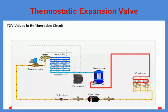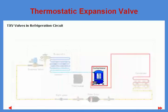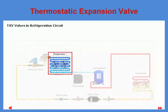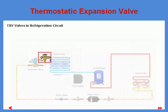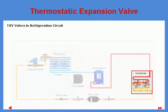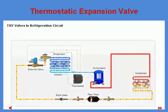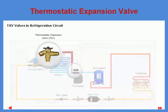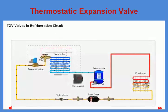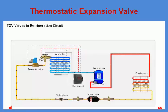Here you can see a basic refrigeration system with a compressor, evaporator, thermostatic expansion valve or TXV, and condenser as the main components. The thermostatic expansion valve is mounted in front of the evaporator, with the bulb and an external equalizing line mounted on the suction line just after the evaporator.